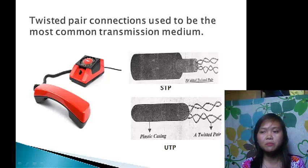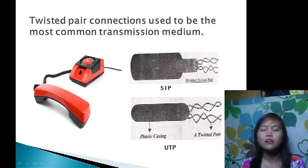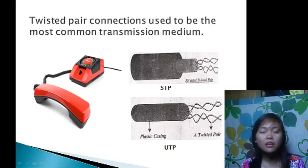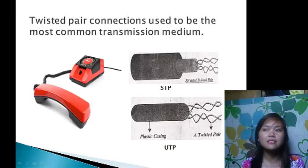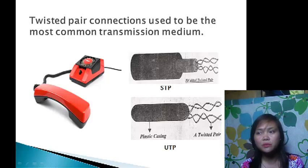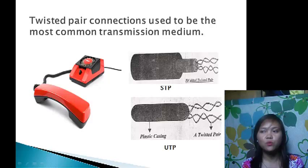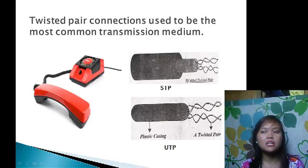Unshielded twisted pair, or UTP, is more common. It can be either voice grade or data grade depending on the application. Its advantages include easy installation, capability of high speed over longer runs, and low cost. The disadvantage is short distance due to attenuation. The shielded twisted pair, or STP, is similar to UTP but has a mesh shielding that protects it from EMI, which allows for higher transmission rates.